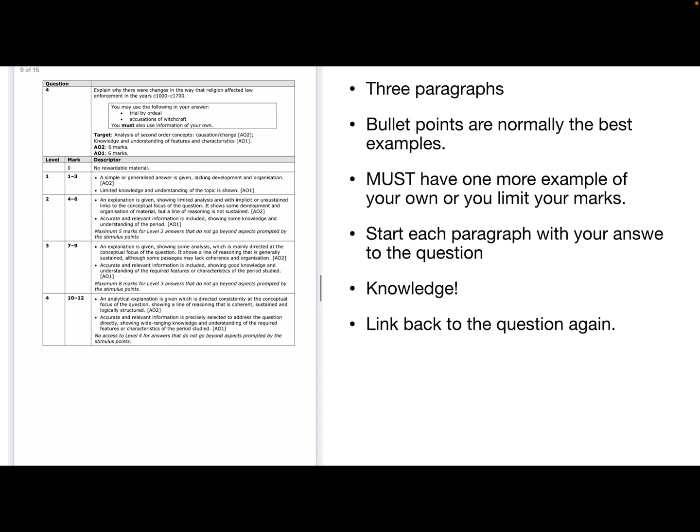Right, the next one, explain why there were changes in the way that religion affected law enforcement in the years 1000 to 1700. You may use the following in your answer, trial by ordeal, accusations of witchcraft. You must also use information of your own. So that bit which says you may use the following in your answer, if you don't like those two, if you don't know them, pick something else that you know helps answer the question. This is a three paragraph answer, no introduction. Bullet points on the question are normally the best examples, so they normally try and pick out the ones that are going to help you answer the question. You must have more than those two points or you limit your marks. And we're going to start each paragraph with our answer to the question. The knowledge is then going to support that and then we're going to link it back to the question.